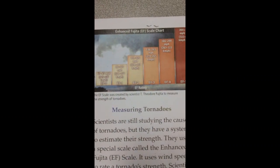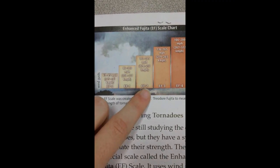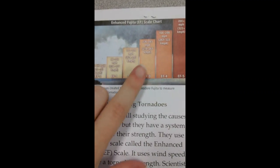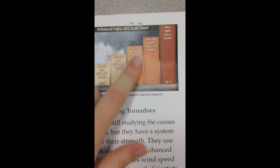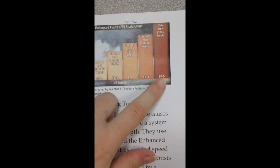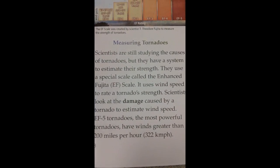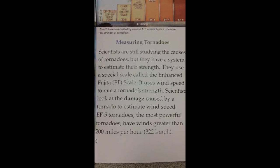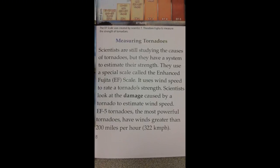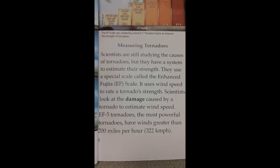Measuring tornadoes: The EF scale measures tornado strength by wind speed — EF0: 65–85 mph, EF1: 86–110 mph, EF2: 111–135 mph, EF3: 136–165 mph, EF4: 166–200 mph, EF5: 200+ mph. The EF scale was created by scientist Theodore Fujita. Scientists use it to estimate tornado strength by examining the damage caused.